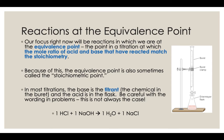Now for most problems about titration, the base is the titrant — it's the chemical inside the burette — and the acid is in the flask. Be careful with the wording in problems, that's not always the case, but that's usually the case. That is usually how you guys have titrated too: you put the acid in the Erlenmeyer flask, add some phenolphthalein, and then add base just enough for it to turn that light pink, indicating you've gone just past the equivalence point.